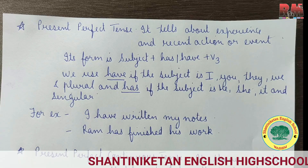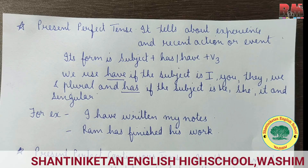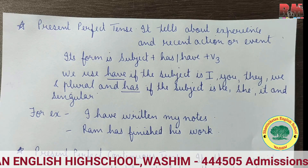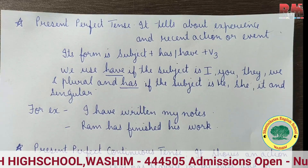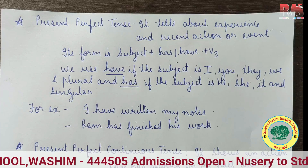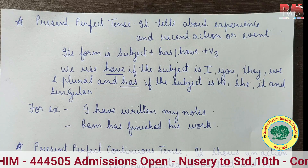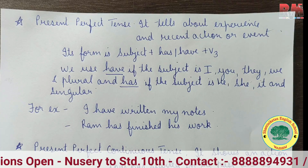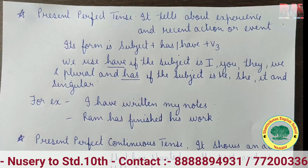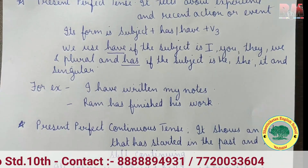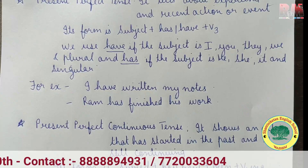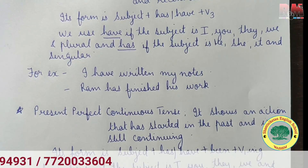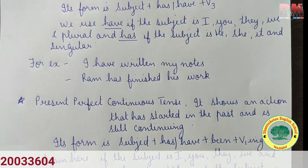The third form of present tense is present perfect tense. It tells about experience and recent action or event. Its form is subject plus has/have plus V3. We use 'have' if the subject is I, you, they, we, or plural, and 'has' if the subject is he, she, it, or singular.